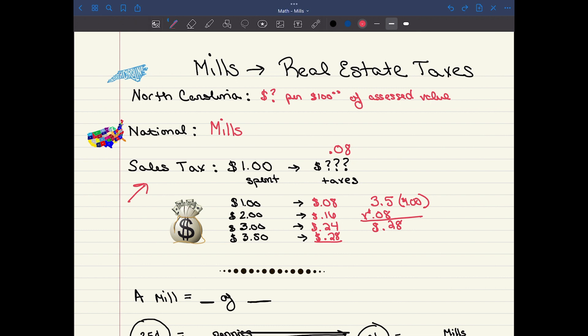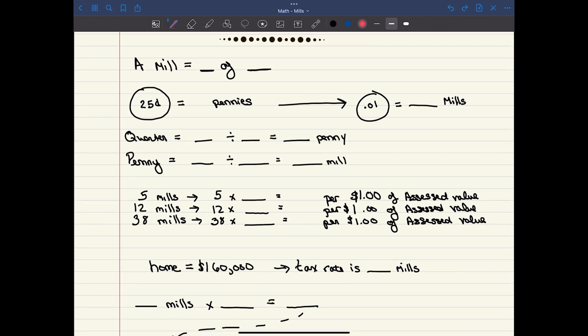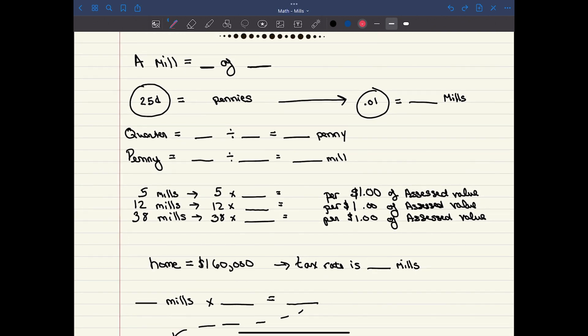Now, let's take what we know about sales tax and apply it to real estate taxes using mills. Officially, a mill is worth one-tenth of one cent. So we can break a mill down into our current money system.